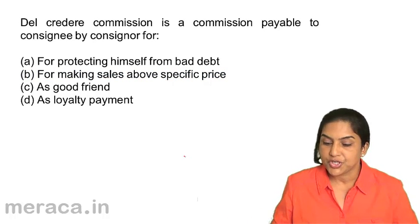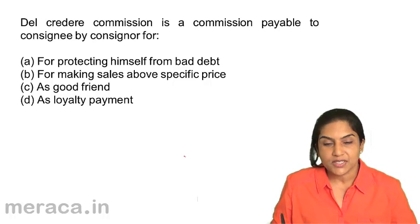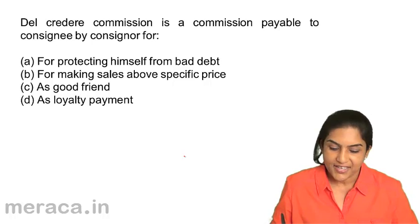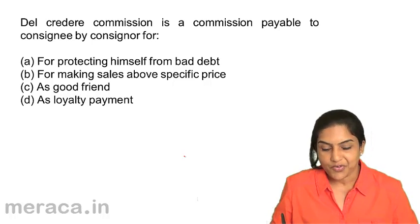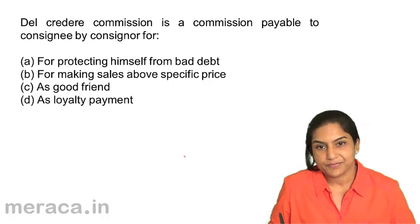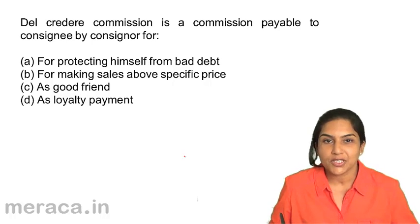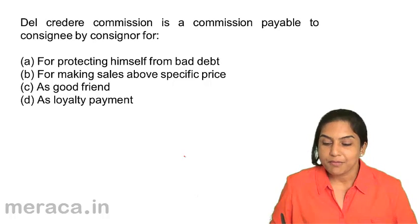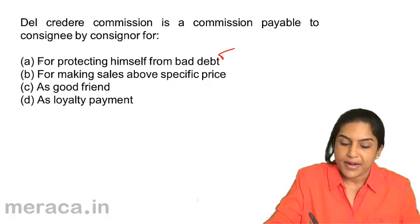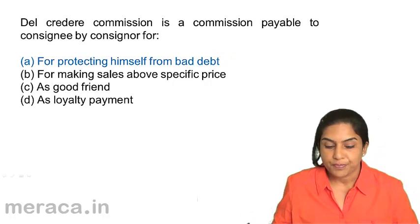Del credere commission is a commission payable to the consignee by the consigner for: A. Protecting himself from bad debt, B. For making sales above a specific price, C. As a good friend, D. As a loyalty payment. Del credere commission is payable for protecting the consigner from bad debt. So the correct option is A.